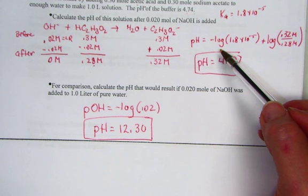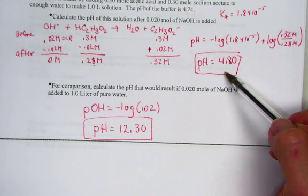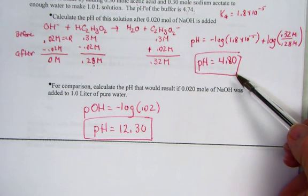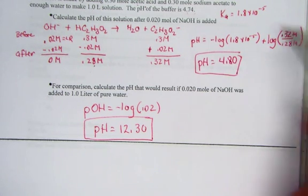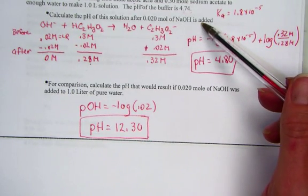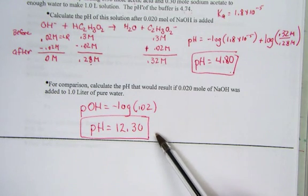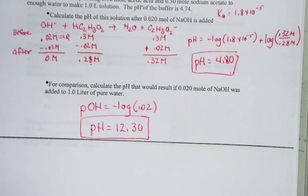When sodium hydroxide was added to a buffered solution, the pH hardly budged - it went up to 4.80 from 4.74. Addition of the strong base in a buffered solution barely moved the pH, but if added straight to water, we'd expect a pH of 12.3, a significant difference.